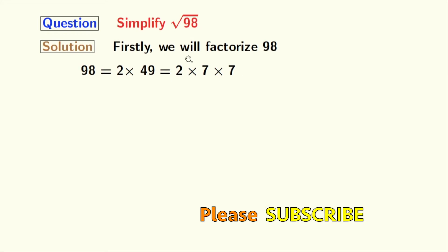Now, all these numbers are prime numbers, so we will not factorize further. Finally, we get 98 is equal to 2 times 7 times 7. And this is the prime factorization of 98.